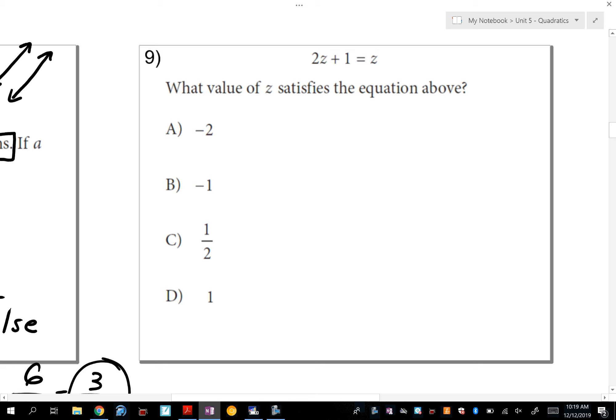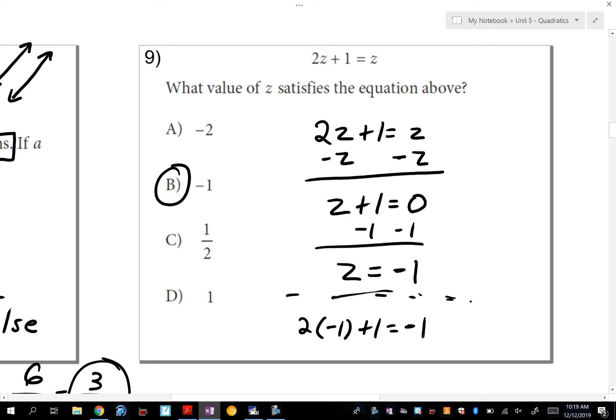Okay, number 9. Number 9 asks you to find z that satisfies this equation. So we're just going to solve for z. I notice in this equation, you've got z on both sides of the equal sign. So my preference is going to be to subtract z from both sides to get z plus 1 equals 0. And if I move that one over with subtraction, I'll get z equals negative 1. So the answer is B. You can always check your work to make sure. If you plug it back into the original, you get 2 times negative 1 plus 1 is equal to negative 1. And that is a true statement. Negative 2 plus 1 is negative 1.